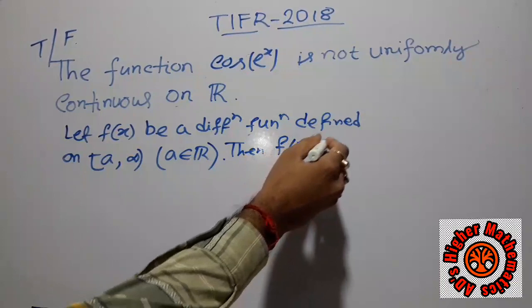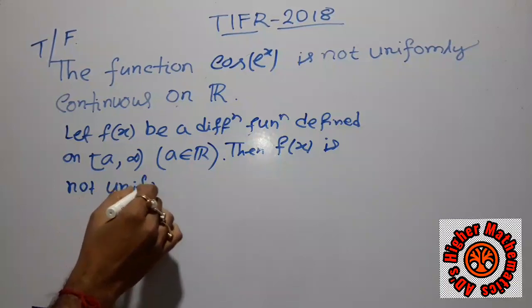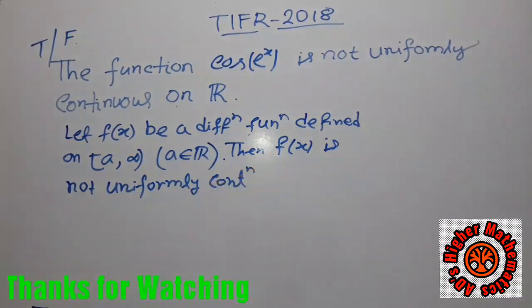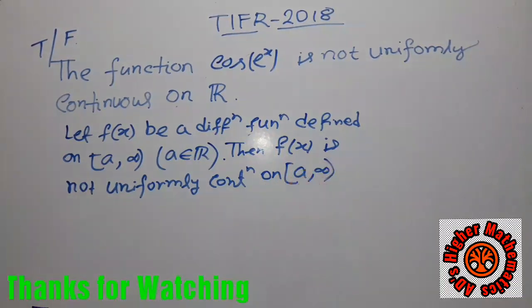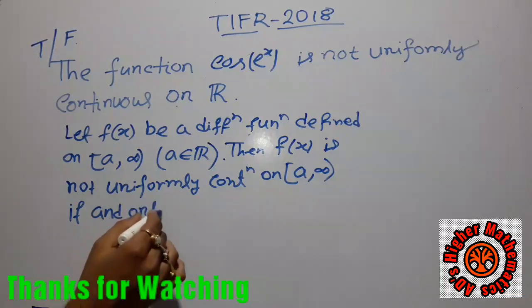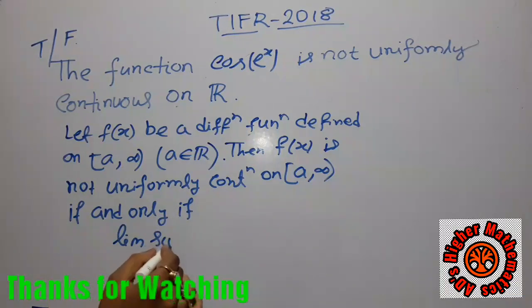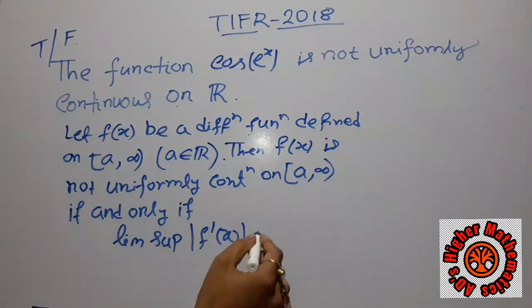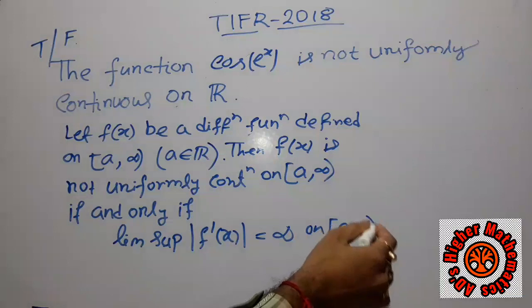Then f(x) is not uniformly continuous on [a, ∞) if and only if the limit supremum of |f'(x)| equals infinity on [a, ∞).